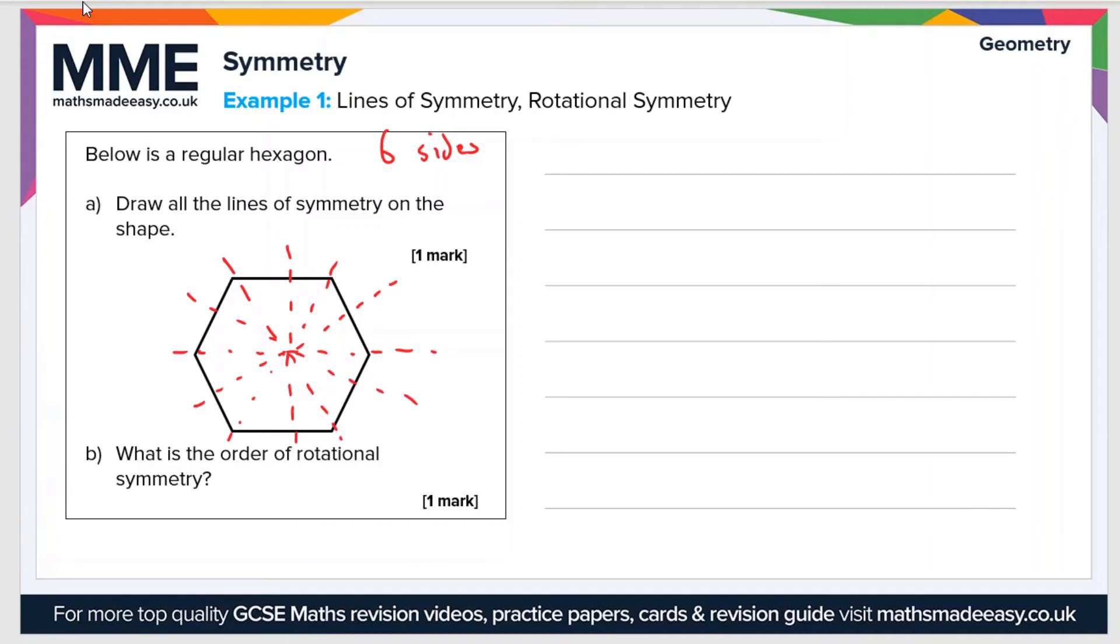In total there are one, two, three, four, five, six lines of symmetry. Part b: What is the order of rotational symmetry? Well, this is a regular shape, it's a hexagon with six sides, so therefore the order of rotational symmetry equals six.